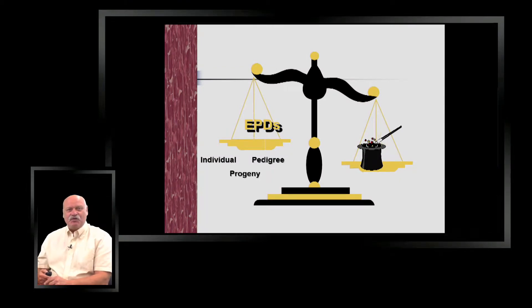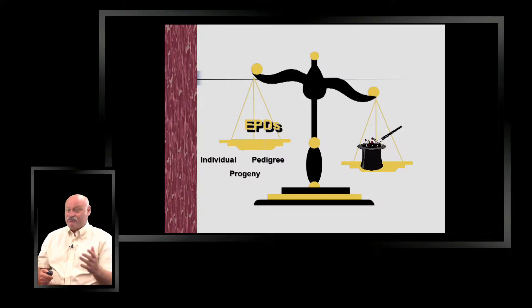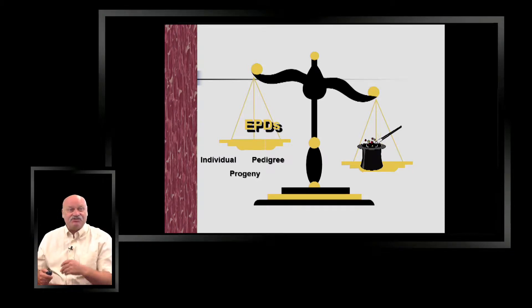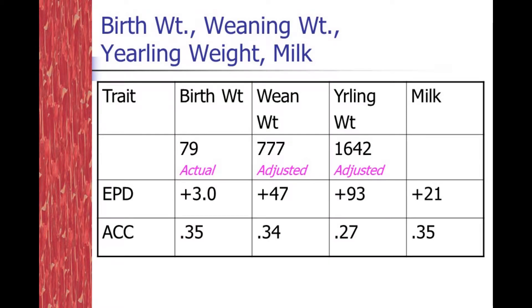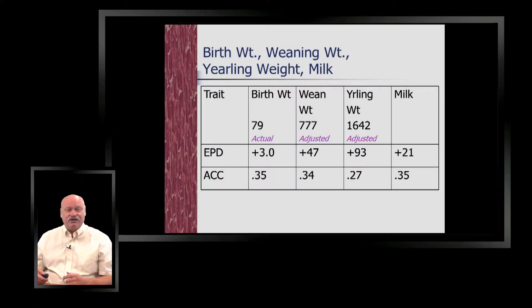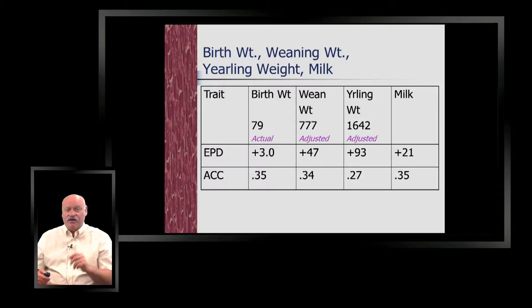There are individual pedigrees — that's about their ancestors. And expected progeny differences, or EPDs, can be a combination of ancestry, their own performance, or their progeny's performance. Here's some example data: we've got traits like birth weight, weaning weight, yearling weight, and milk. The accuracies shown below reflect where that data came from — could be the individual, its progeny, or parentage.